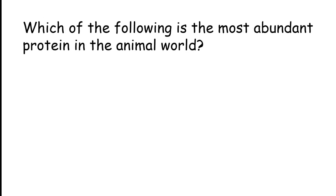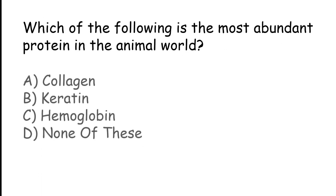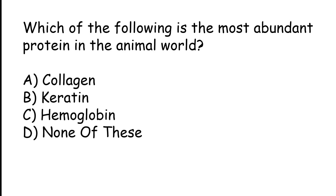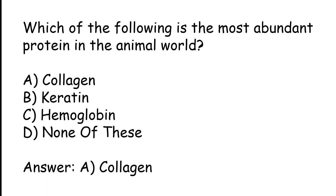Which of the following is the most abundant protein in the animal world? Options: collagen, keratin, hemoglobin, none of these. The correct answer is option A: collagen.